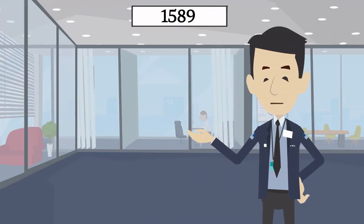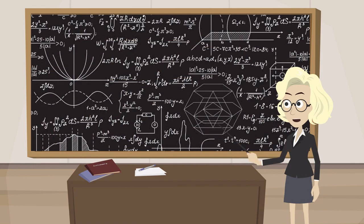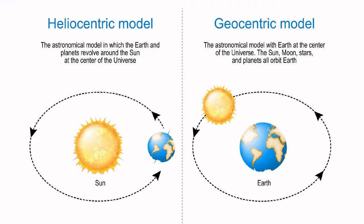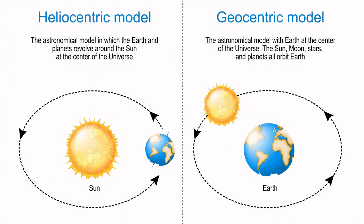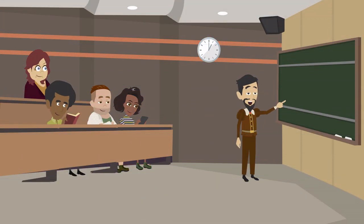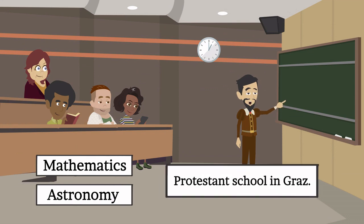In 1589, Kepler joined the University of Tübingen, excelling in mathematics and gaining a reputation as an adept astrologer. Guided by Michael Maestlin, his professor of mathematics, Kepler learned about Ptolemaic and Copernican systems, ultimately embracing heliocentrism. By age 23, he took a teaching position in mathematics and astronomy at a Protestant school in Graz.